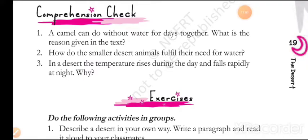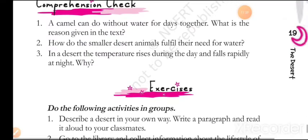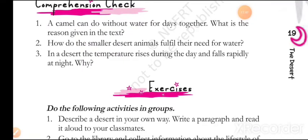Comprehension check two. Question one: A camel can do without water for days together — what is the reason given in the text? A camel can stand high body temperatures, it sweats very little, and therefore it can retain the water it drinks for long periods of time. Question two: How do the smaller desert animals fulfill their need for water? Smaller desert animals do not drink water. Some eat other animals and get moisture from the meat; others get water from the juices of plants and seeds they eat.